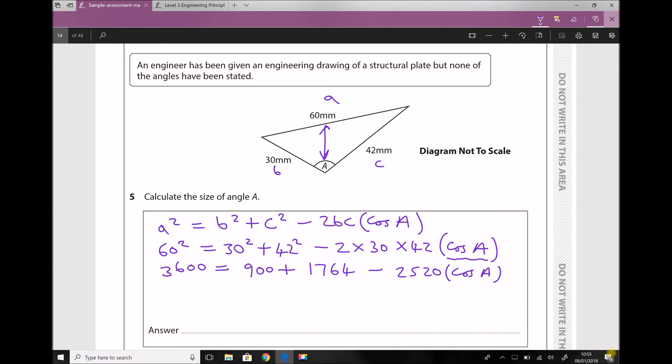Now I can continue simplifying. The next thing I'm going to do is minus 900 from each side and minus 1764 from each side, or in effect, minus 2664 from each side.